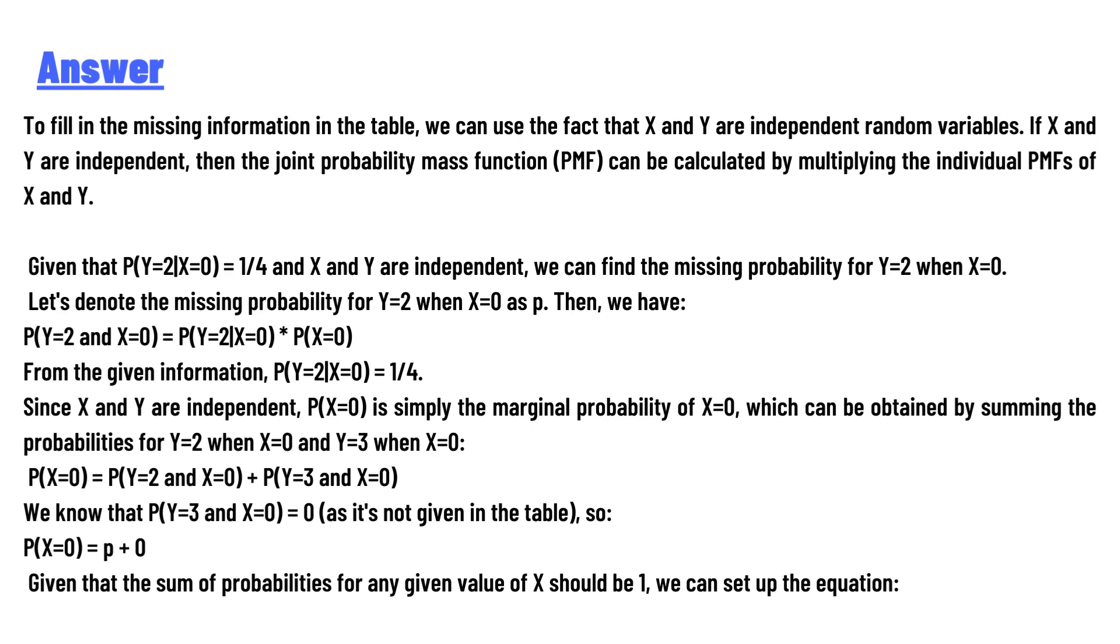Given that P(Y=2|X=0) = 1/4 and X and Y are independent, we can find the missing probability for Y=2 when X=0. Let's denote the missing probability for Y=2 when X=0 as p. Then we have: P(Y=2 and X=0) = P(Y=2|X=0) × P(X=0). From the given information, P(Y=2|X=0) is 1/4.